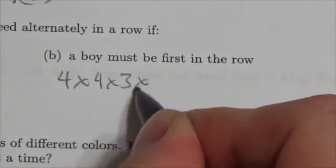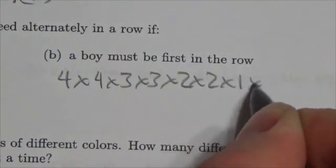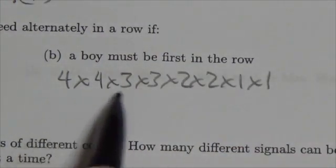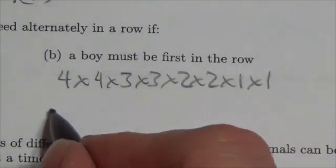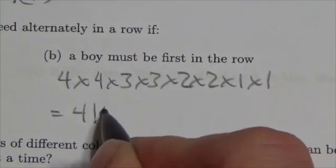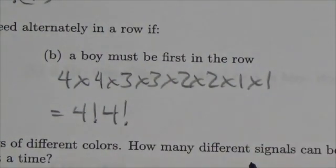Then three, three, two, two, one, one. And remember, this is just placing the individuals. And so that can be simplified down to four factorial times four factorial.